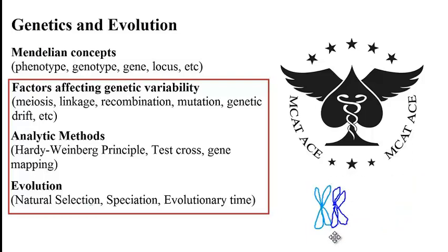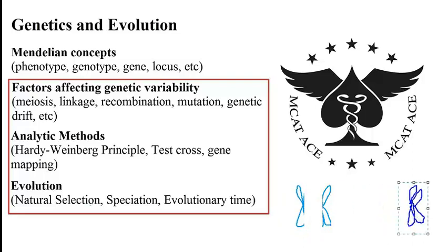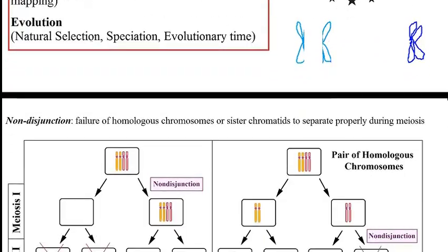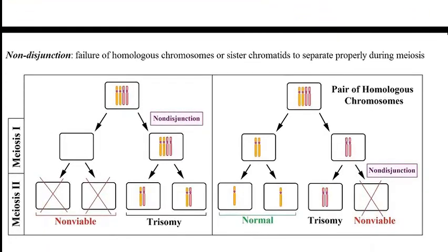Or let's say meiosis one happens properly, but then during meiosis two, one half of the sister chromatids separates properly but the other half all segregates together — that would be another example of non-disjunction. It would be problematic because the presence of an extra chromosome can cause different problems, like Down syndrome, which is from the presence of three copies of chromosome 21.